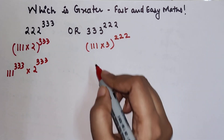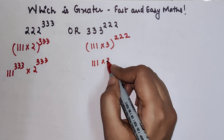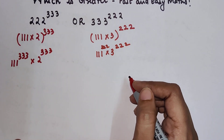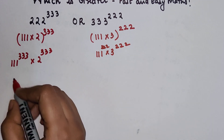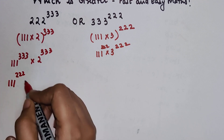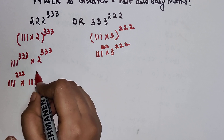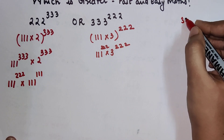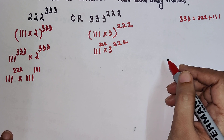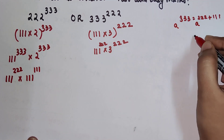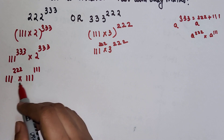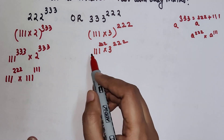Similarly, 111 into 3 raised to 222 gives us 111 raised to 222 into 3 raised to 222. Now for the first expression, 111 raised to 333 can be written as 111 raised to 222 into 111 raised to 111, because 333 is nothing but 222 plus 111. In indices, a raised to 333 equals a raised to 222 into a raised to 111. So here we also have 111 raised to 222 as a common factor.